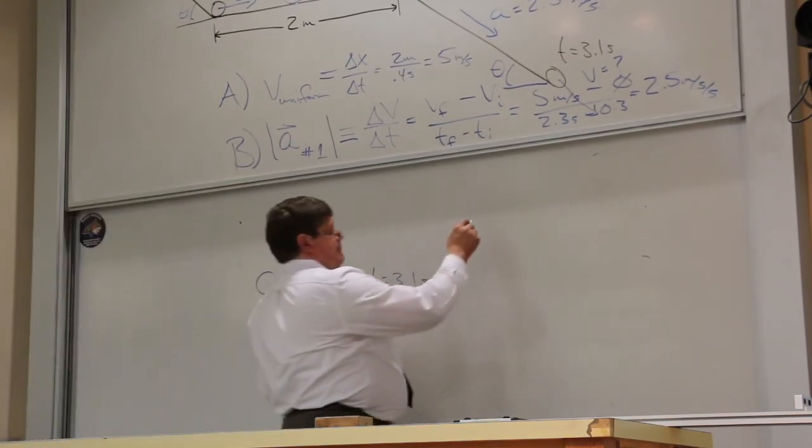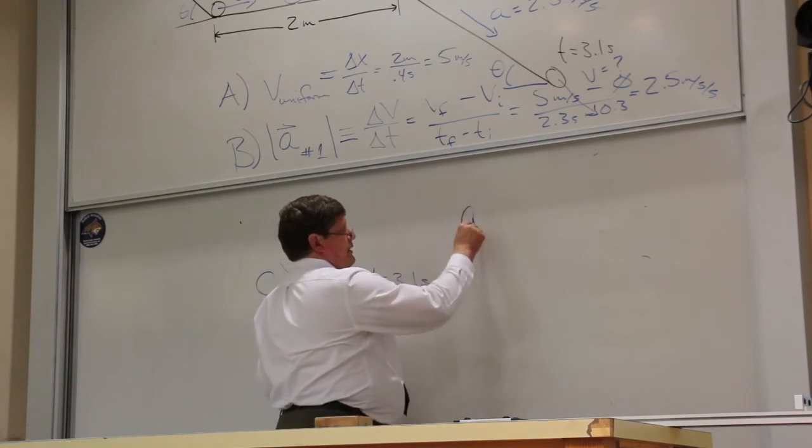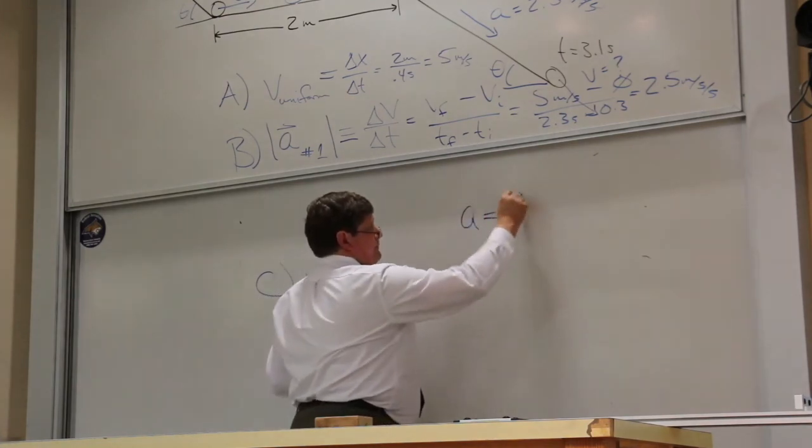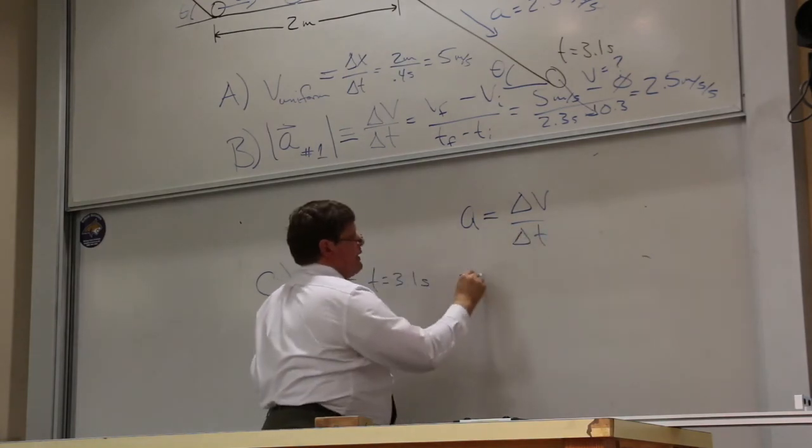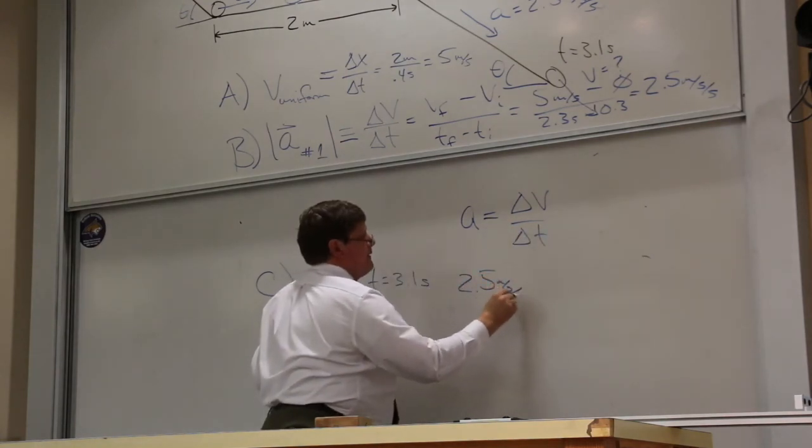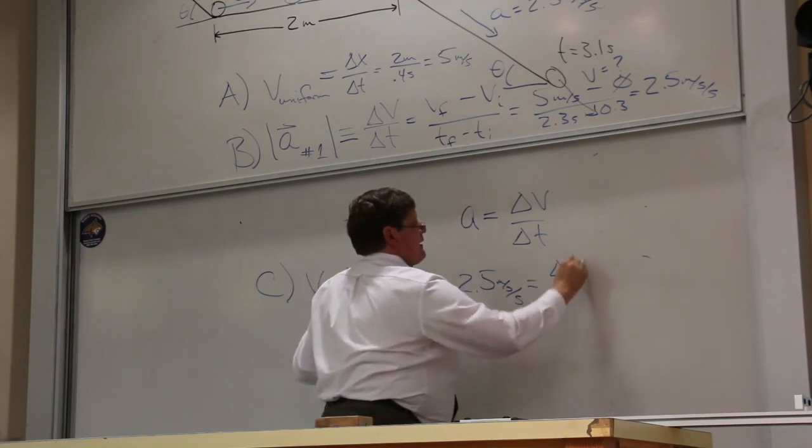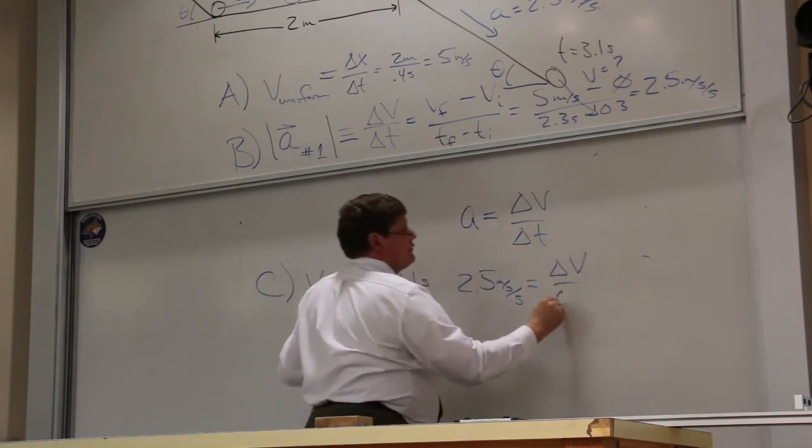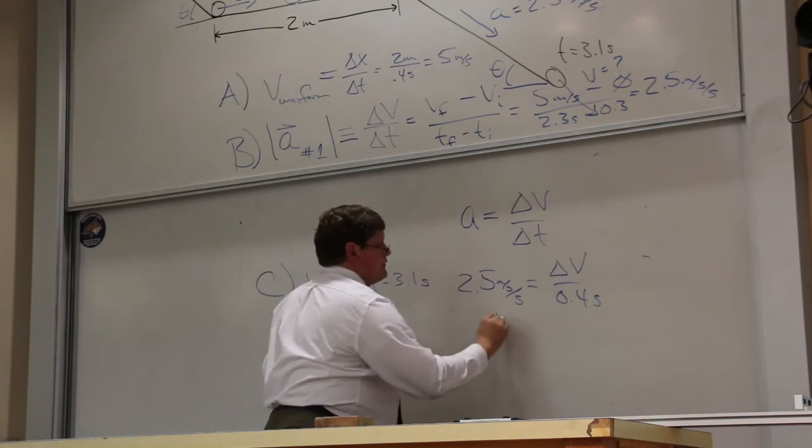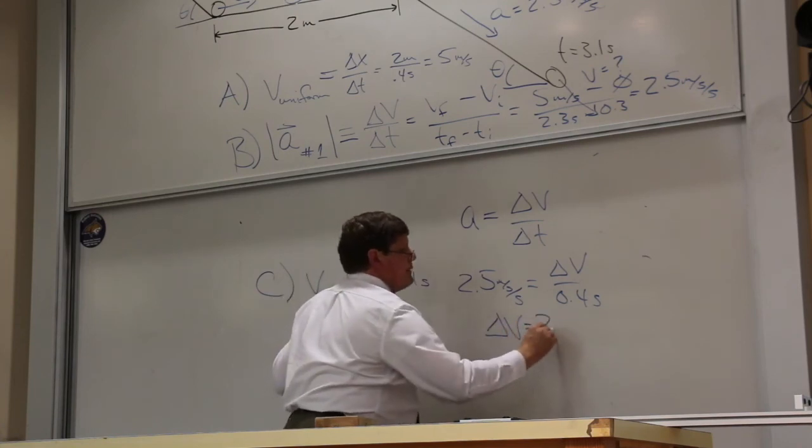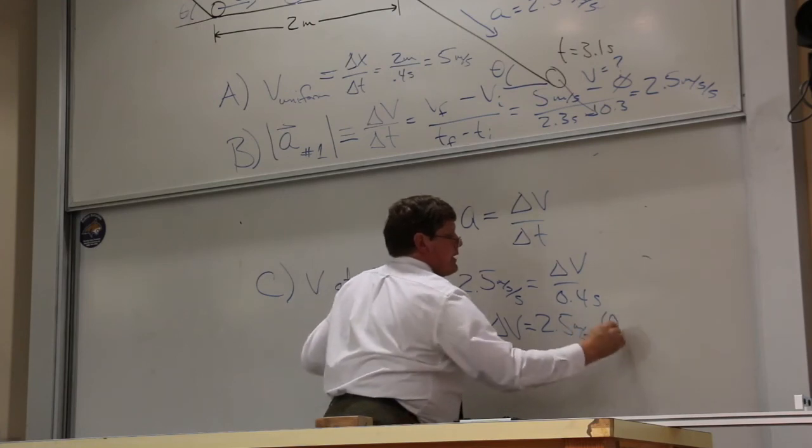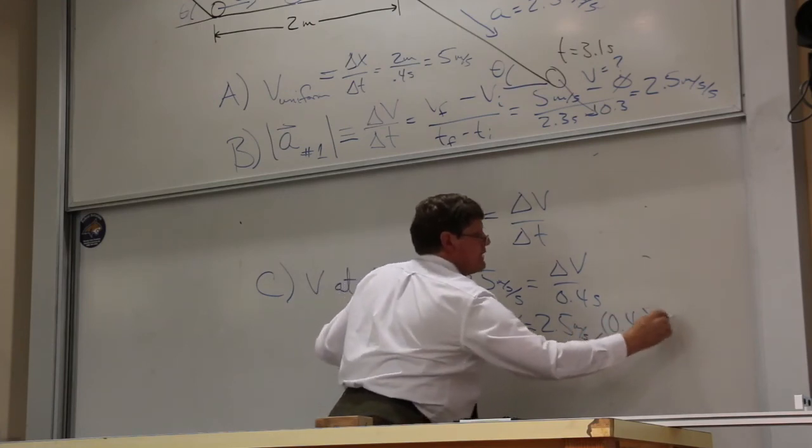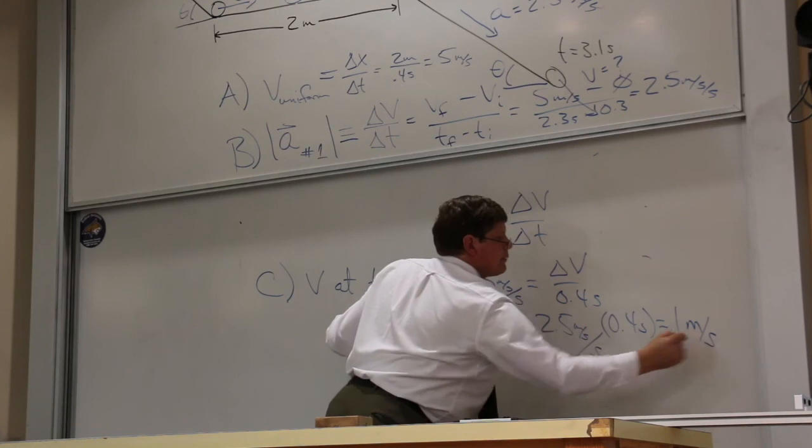I can find that by using the operational definition of acceleration. If A is 2.5, and delta T is 0.4, that means that my change in velocity is going to be 2.5 meters per second for every second, but I only have 0.4 seconds, and that's going to be 1 meter per second.